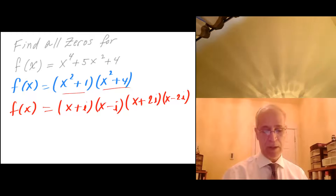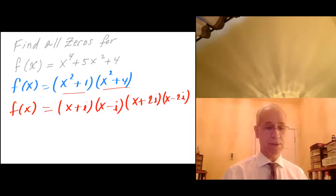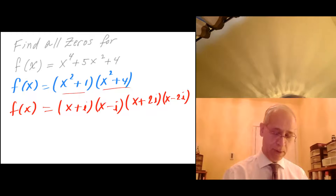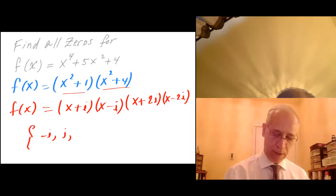Okay, so these are the factors. What are the zeros? The zeros are: from the first factor this gives me minus i, then plus i, then minus 2i, and then plus 2i.